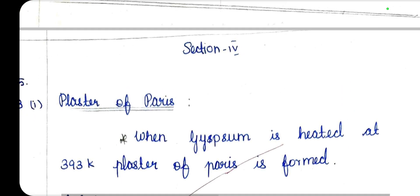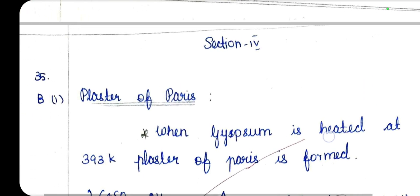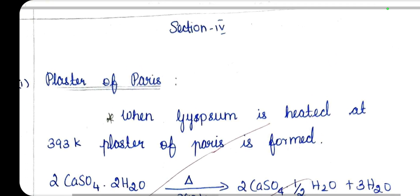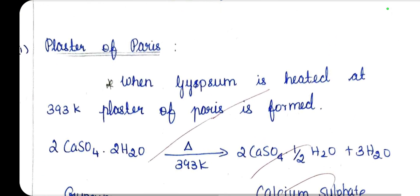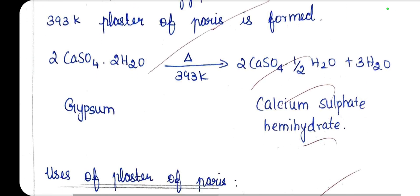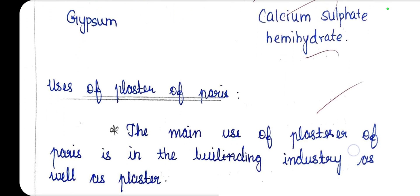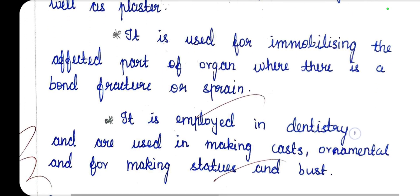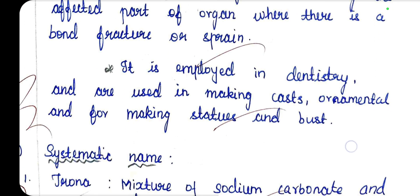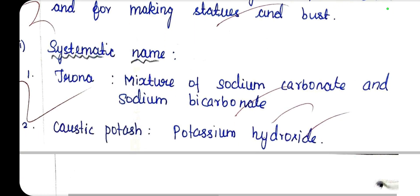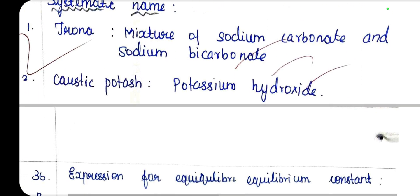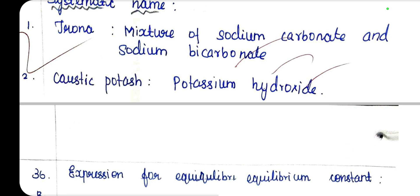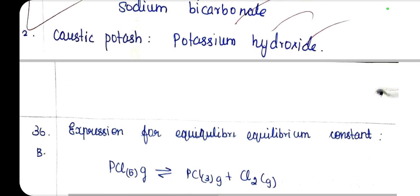Plaster of Paris preparation and uses. Systematic name of Trona: it is a mixture of sodium carbonate and sodium bicarbonate. Caustic potassium is potassium hydroxide.